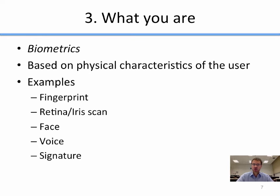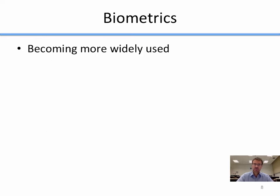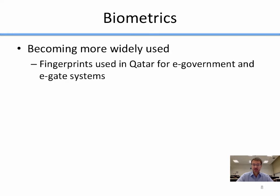Biometrics are a big and growing area becoming more widely used. Even here in Qatar, fingerprints are used for e-government and e-gate systems. If you have a smart card and go to a self-service MOI terminal, it asks you to place your finger for fingerprint identification. At that point you're using two factors of authentication: what you have — your smart card — and what you are — your fingerprint.